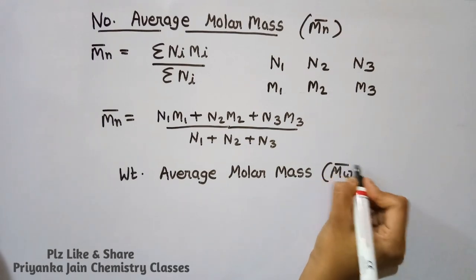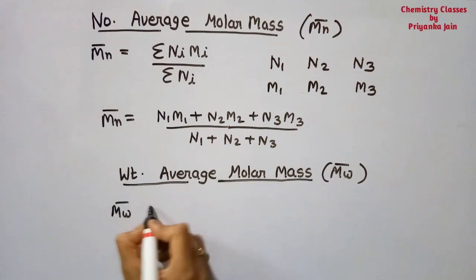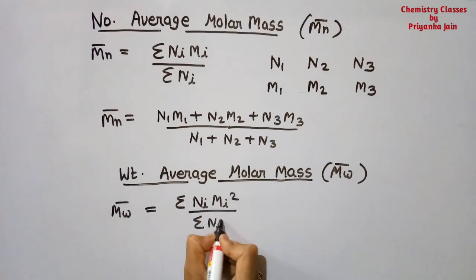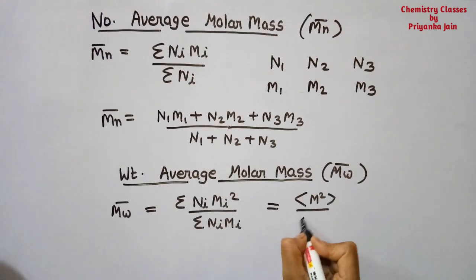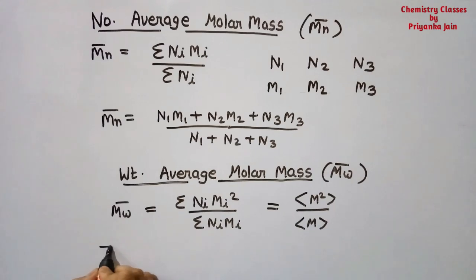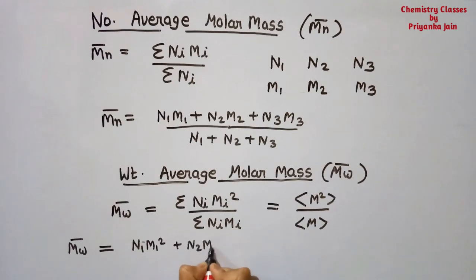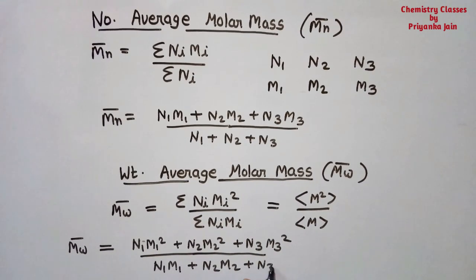Second is weight average molar mass, Mw. The formula is: Mw = Σ(ni·Mi²) / Σ(ni·Mi). This can also be written in an alternate form. In practice: Mw = (n1·M1² + n2·M2² + n3·M3²) / (n1·M1 + n2·M2 + n3·M3).